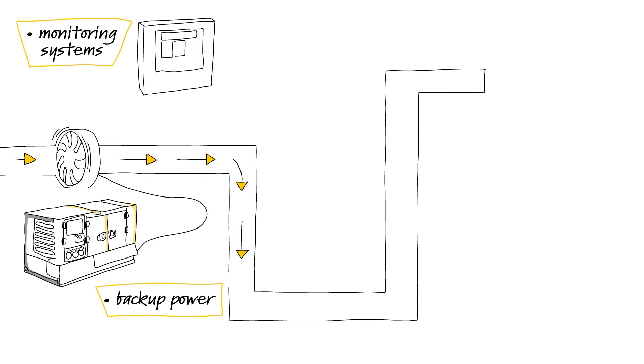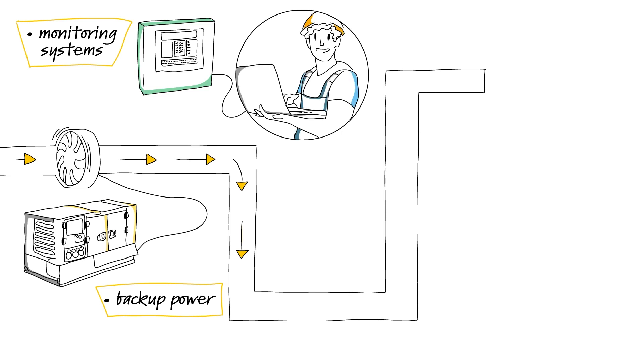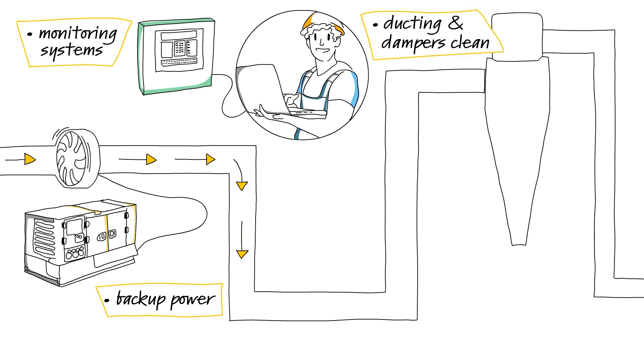Install monitoring systems, such as oxygen sensors within your drying or combustion systems. These systems will help your operator know when syngas levels increase so they can take action to avoid a fire or explosion. Keep your ducting and dampers clean, and make sure your venting is effective.